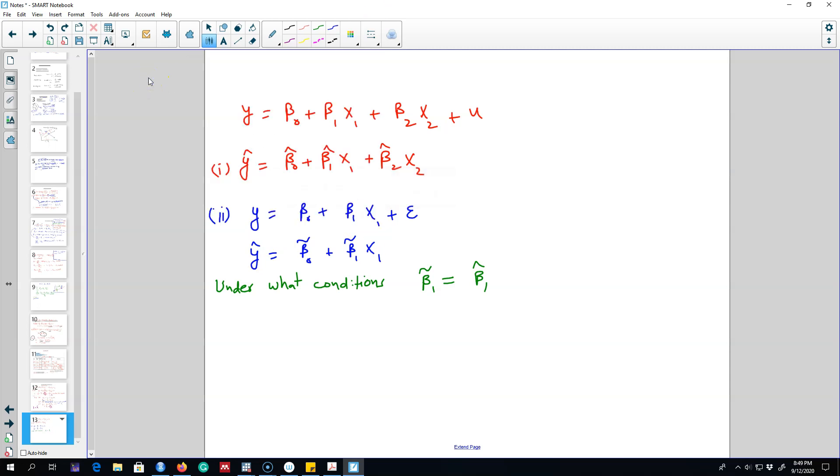We can represent this relationship as beta 1 tilde equals beta 1 hat plus beta 2 hat delta 1. These are the conditions under which beta 1 tilde will be equal to beta 1 hat. If beta 2 hat is 0 or delta 1 is 0, then essentially if beta 2 is 0 this whole term will vanish and beta 1 hat will be equal to beta 1 tilde. Similarly if delta 1 is 0 this whole term will vanish and beta 1 tilde will be equal to beta 1 hat.